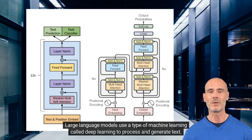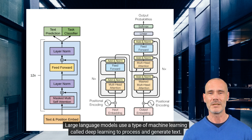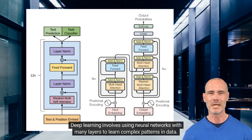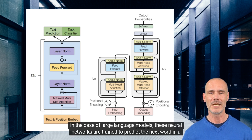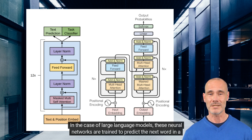Large language models use a type of machine learning called deep learning to process and generate text. Deep learning involves using neural networks with many layers to learn complex patterns in data. In the case of large language models, these neural networks are trained to predict the next word in a sequence based on the context of the words that came before it.